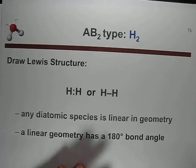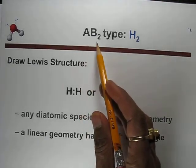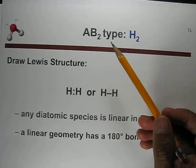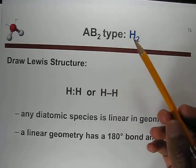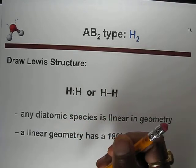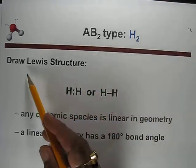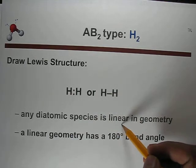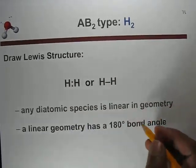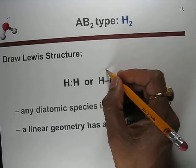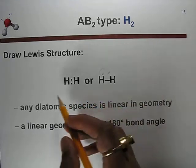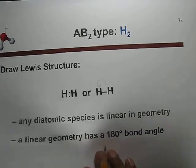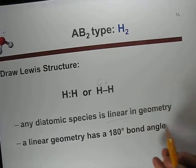The first example is hydrogen, but it does not strictly fall into AB2 type because there is no third atom. Diatomic molecules also come into this category. If a diatomic species has no non-bonding electrons, it has a linear geometry. A linear geometry has a 180-degree bond angle — this is an important point to remember.